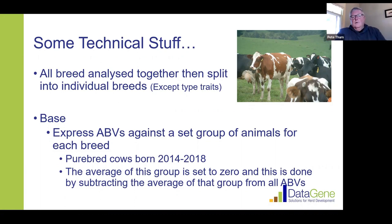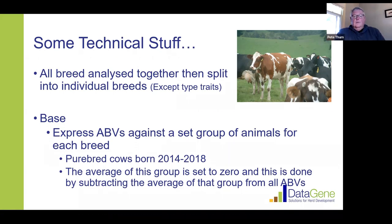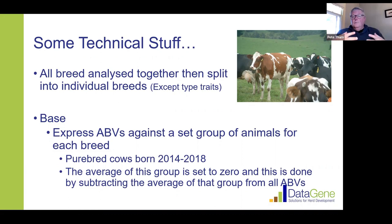From there, we start to split the breeds out so they're in their own breed groups — Holsteins compared to Holsteins, Jerseys to Jerseys. We identify a group of cows as a comparison group, which is what we call the base. That comparison group is purebred cows born between 2014 and 2018. We set their breeding values to zero by subtracting the average breeding value of that group, so the average purebred cow born in that window will have a breeding value of zero — within their respective breed.